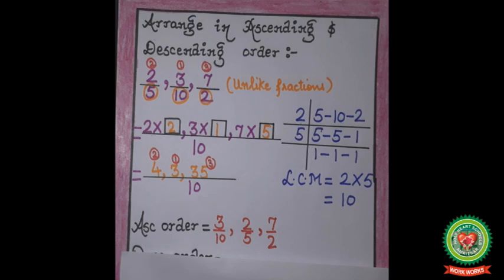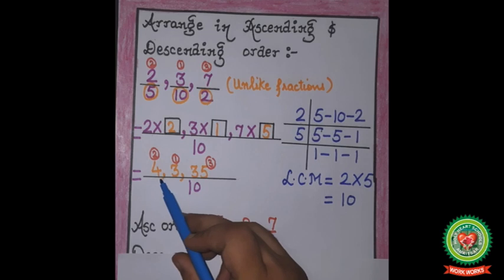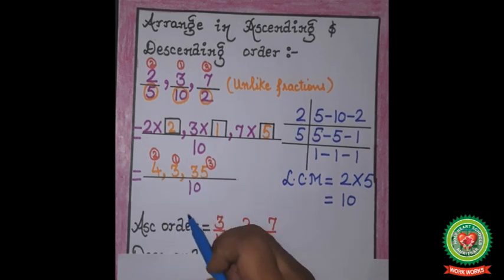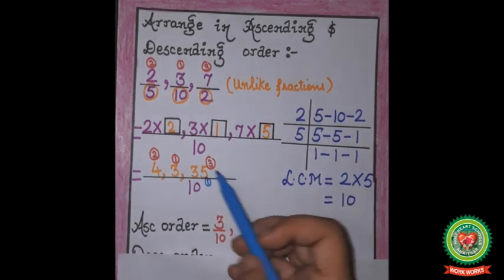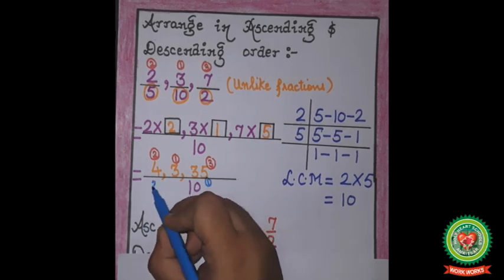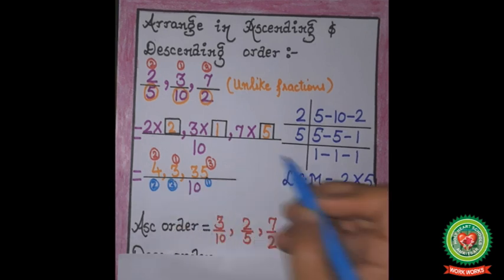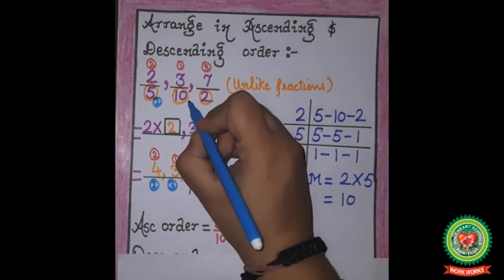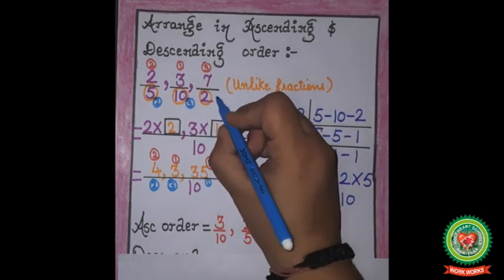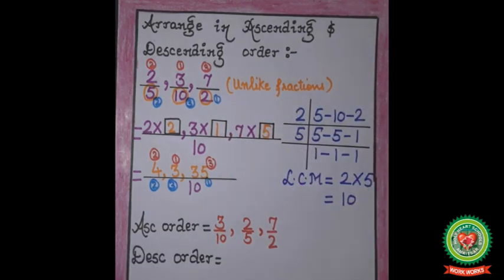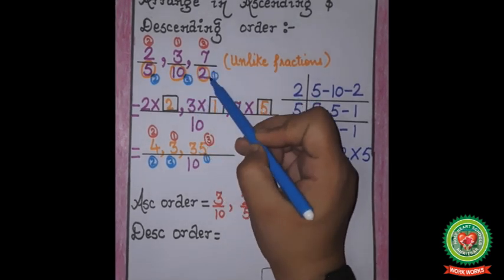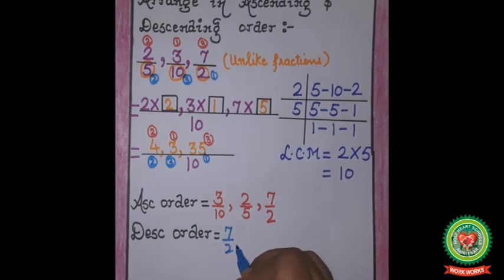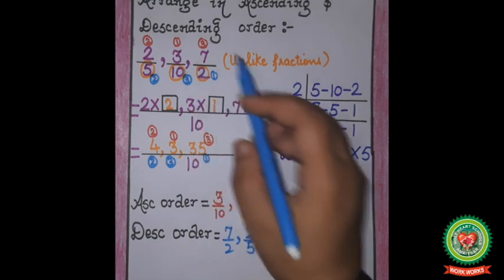For descending order, meaning big to small: comparing 4, 3, and 35, the greatest is 35, so 7 upon 2 is number 1. Between 4 and 3, 4 is greater, so 2 upon 5 is number 2, and 3 upon 10 is number 3. Descending order is: 7 upon 2, 2 upon 5, 3 upon 10.